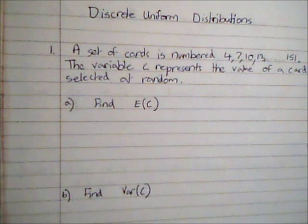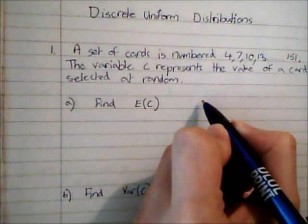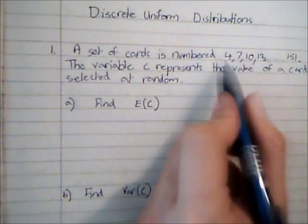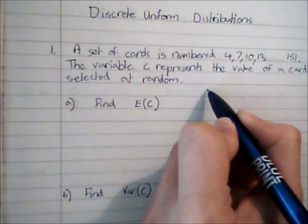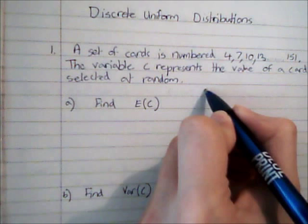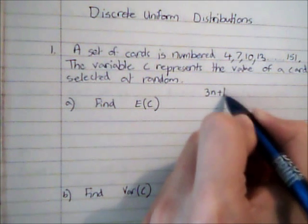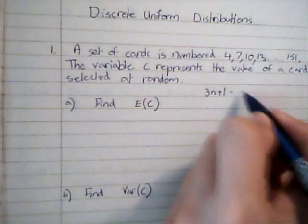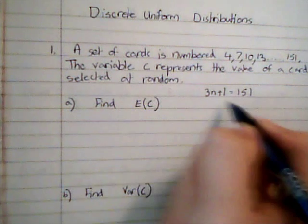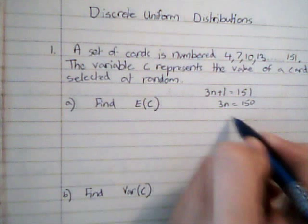What I'm going to do to start with is take this sequence here and work out how many terms there are, which is going to tell me how many cards there are. Using my knowledge of linear sequences, I can see that the nth term of this sequence is going to be 3n plus 1. It's going up in threes and I have to add 1 to each term. If I set that equal to 151, then I know 3n equals 150 and n equals 50.